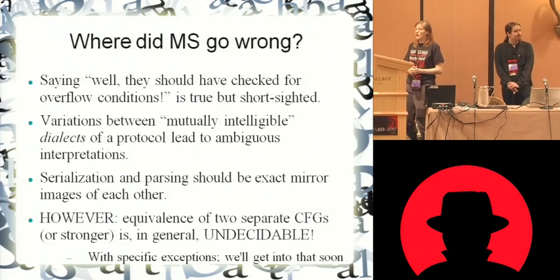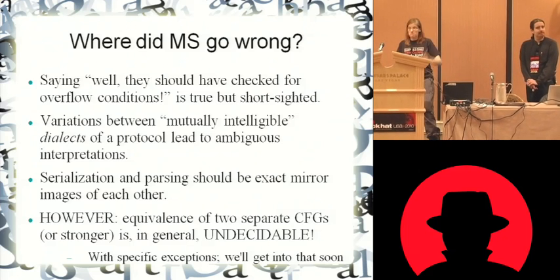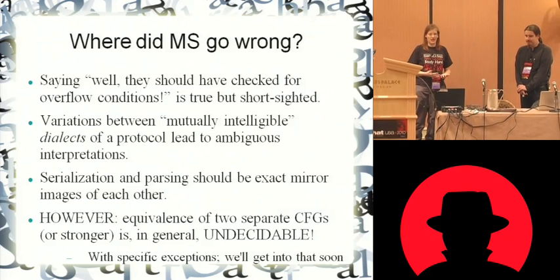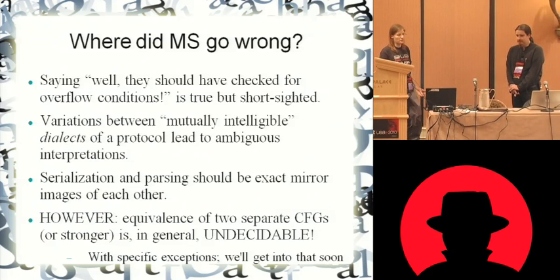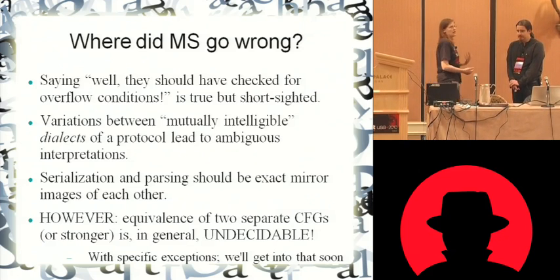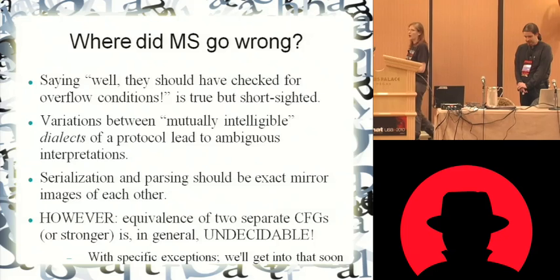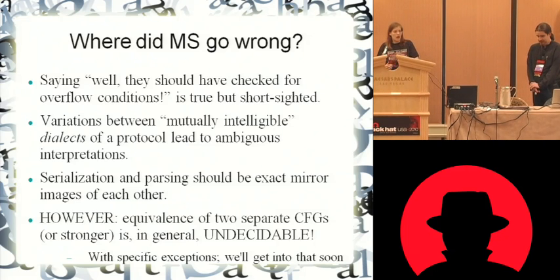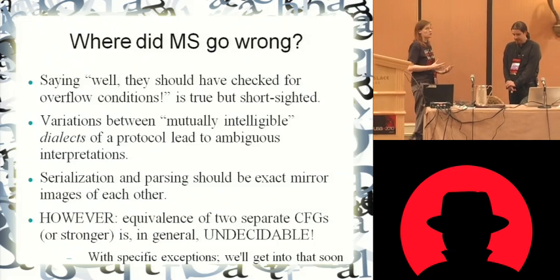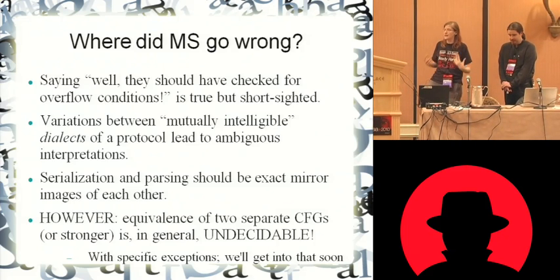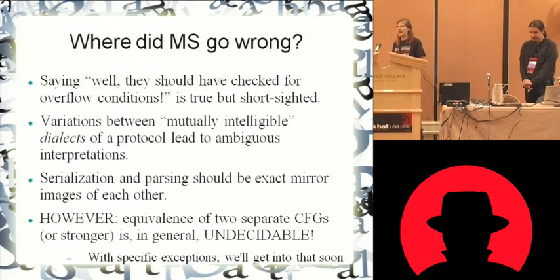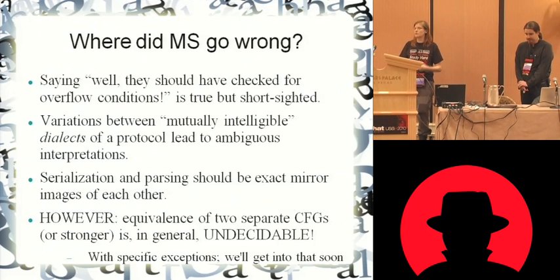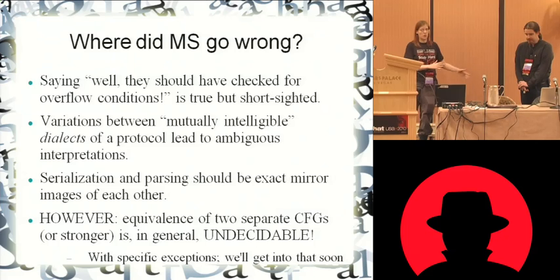In the ideal world, because everything should be specified in a machine-readable fashion in the first place, serialization and parsing ought to be the inverse of one another. The reason why this is important is because if you have two context-free grammars, or anything stronger than that, it is not possible to determine whether they produce the exact same language, unless they have the exact same set of symbols, rules, and transition functions.